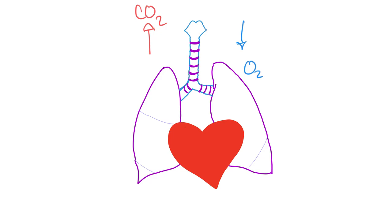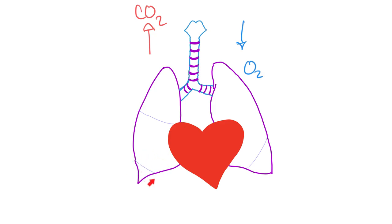Do you remember your respiratory system? Nose or mouth — preferably nose — then the nasopharynx, the larynx, then the trachea. Right main stem bronchus, left main stem bronchus. After the bronchi, you have bronchioles — first regular bronchioles, then terminal bronchioles. As you go deeper and smaller, you become respiratory bronchioles. Welcome to the respiratory zone: respiratory bronchioles, alveolar duct, alveolar sacs, which contain alveoli.